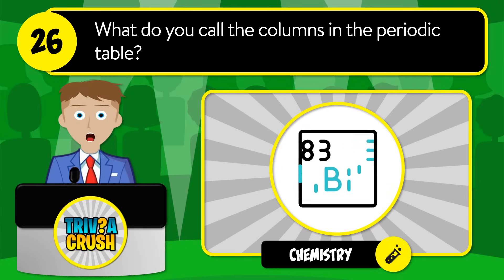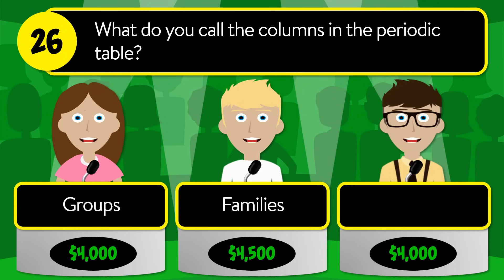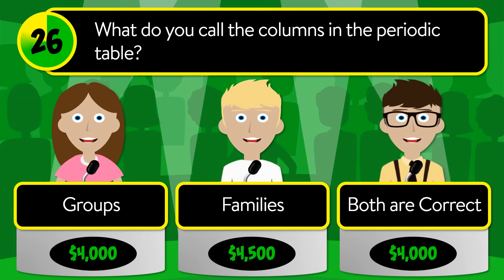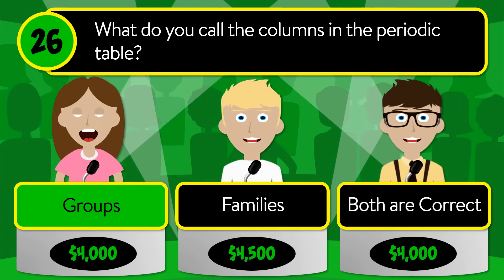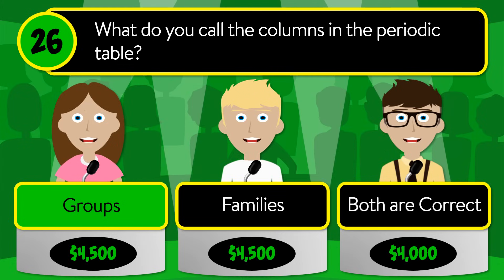Question number twenty-six: what do you call the columns in the periodic table? Is it groups, families, or both are correct? The correct answer is groups.